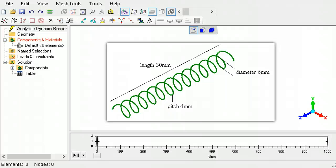The helix has a radius of 3 mm, a pitch of 4 mm, and a length of 50 mm.